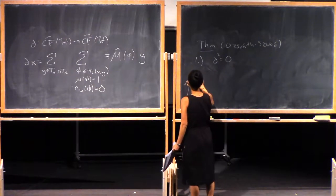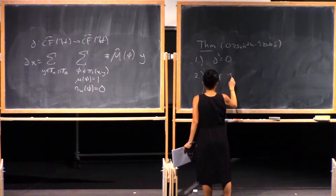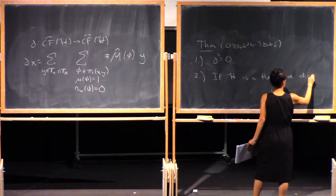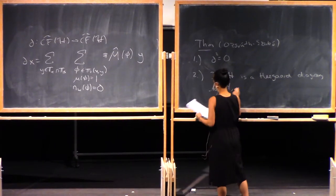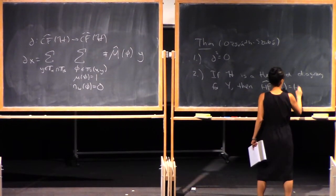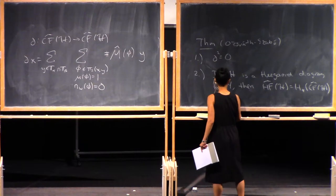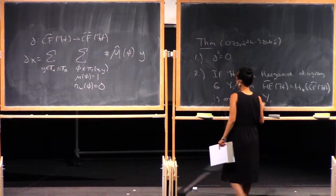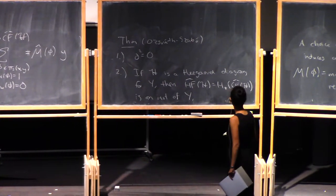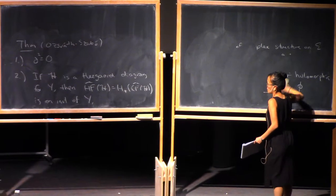The second part is that this actually gives an invariant of the 3-manifold. If H is the Heegaard diagram for Y, then the homology of this chain complex is an invariant of Y. In particular, it doesn't depend on any choices we made — we chose the Heegaard diagram and the complex structure, but it turns out it's independent of all those choices.